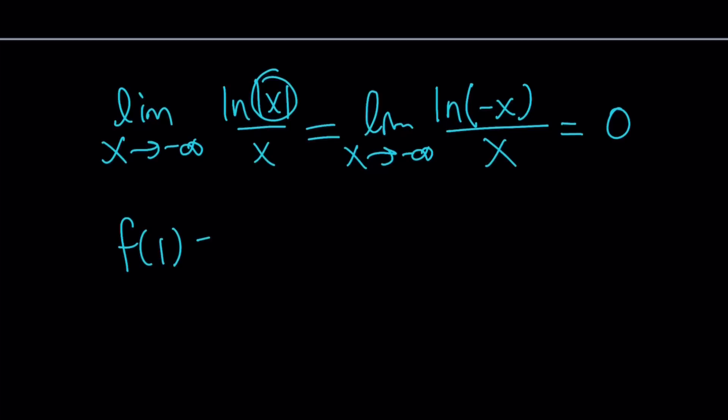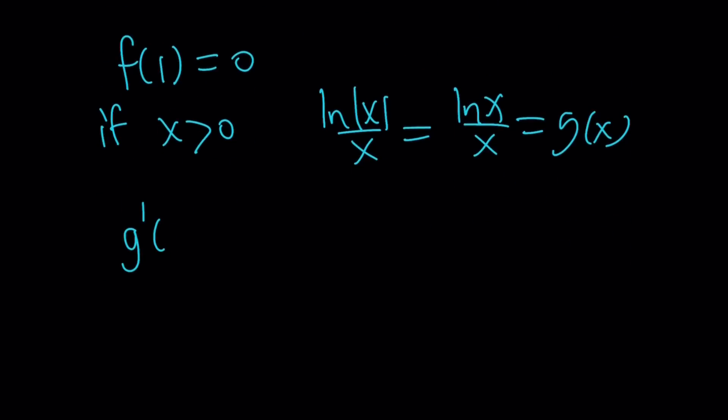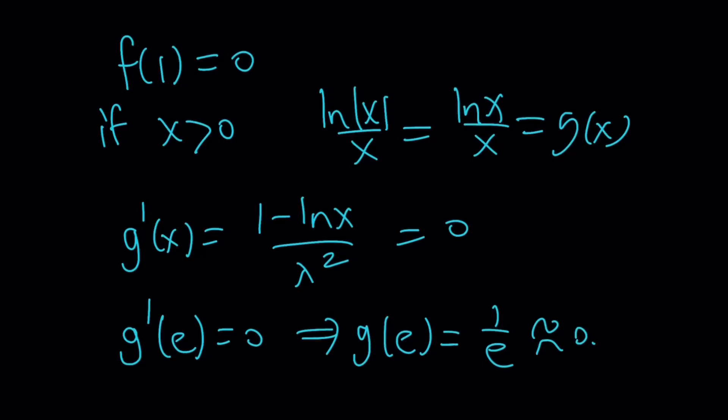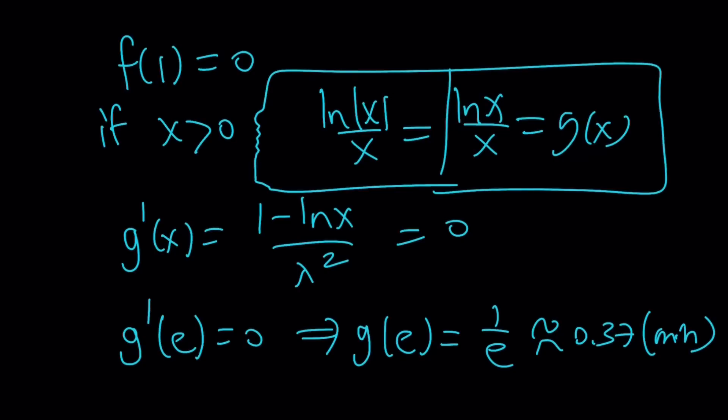So we're going to have like a number divided by infinity, which is zero. Just a limit concept. What is that supposed to mean? As x gets smaller and smaller, our graph is actually going to approach the x axis, which is kind of like acting like a horizontal asymptote. Okay, now take a look at this too. F of one is zero. Now if x is positive, then ln absolute value of x over x is going to be ln x over x. Let's call this g of x. Let's differentiate g of x. We're going to get one minus ln x over x squared.